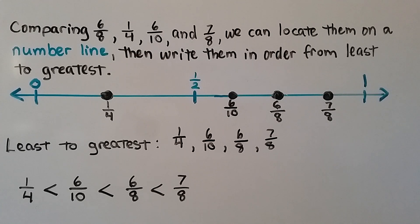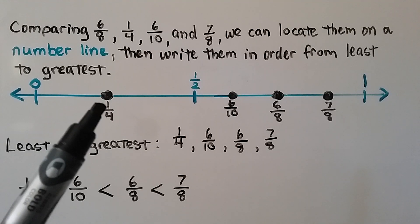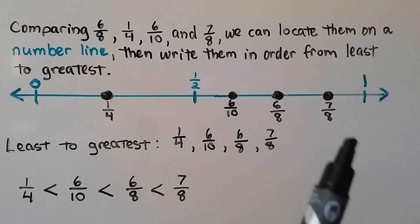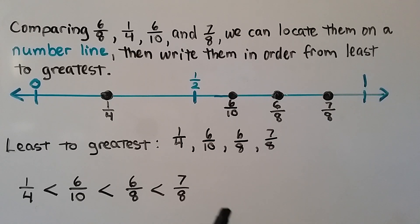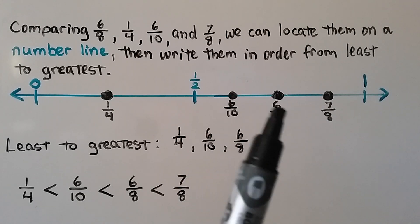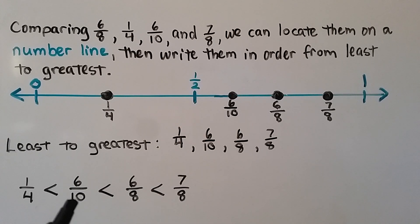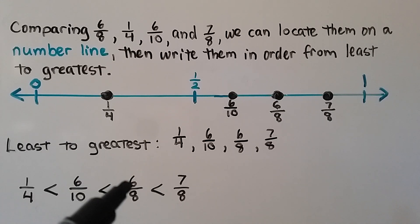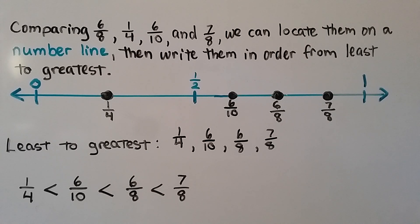By using numerators, denominators, and benchmarks, we can figure out where the fractions belong on the number line. Comparing six-eighths, one-fourth, six-tenths, and seven-eighths, we locate them on the number line and write them in order from least to greatest. The one closest to zero is least, so one-fourth is least. Seven-eighths is closest to one, so it's the greatest. The order is: one-fourth, then six-tenths, then six-eighths, then seven-eighths.